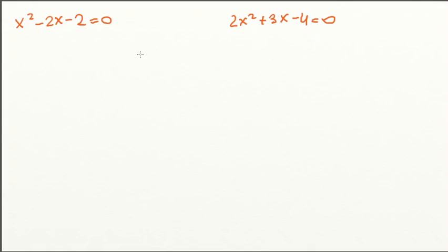Alright, so let's apply our quadratic formula to those two problems. Solve for x. So, in this first case, x squared minus 2x minus 2 is equal to 0.